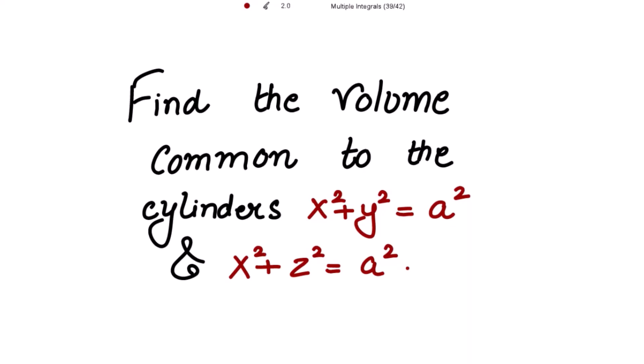Find the volume common to the cylinders x² + y² = a² and x² + z² = a². Two cylinders are given to us, and we need to find the volume common to these cylinders.